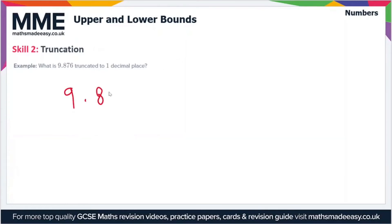Truncation is quite literally just chopping off part of the number. In this case we're truncating to one decimal place, so our cutoff point is after the first decimal place. Anything after the first decimal place we ignore. To one decimal place this is just 9.8.